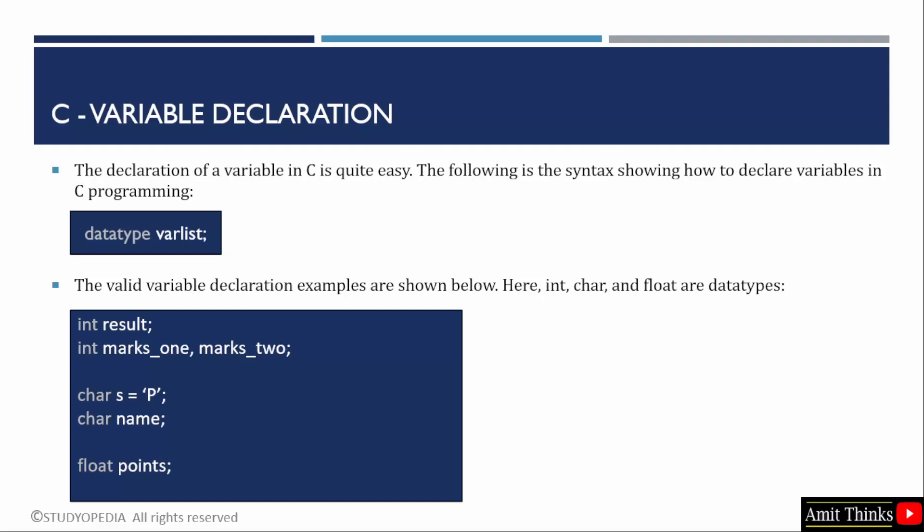Now let us see how to declare a variable. Consider this as creating a variable. The following is the syntax: you need to mention the data type then the variable. Why is it written varlist? That means you can add multiple variables here. We have given some examples below regarding the syntax.